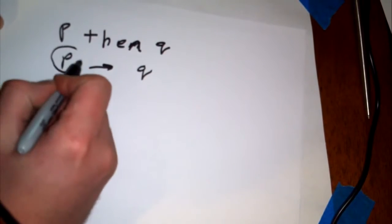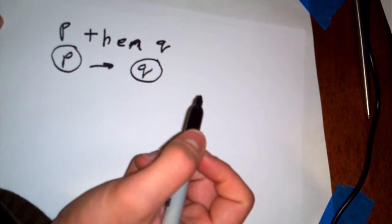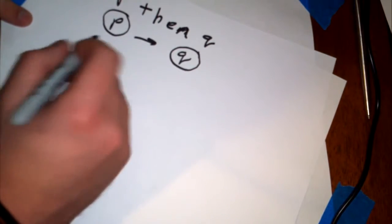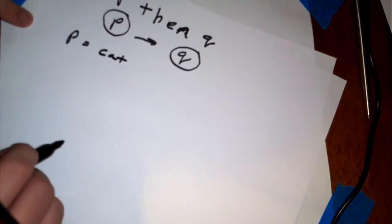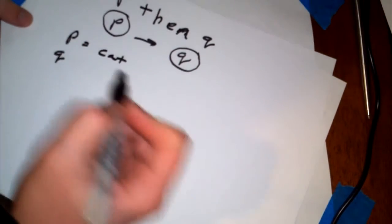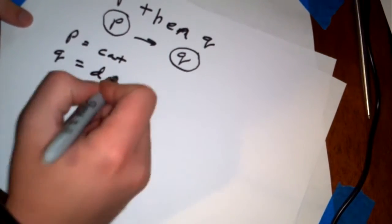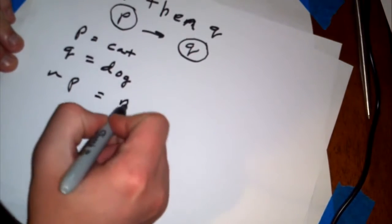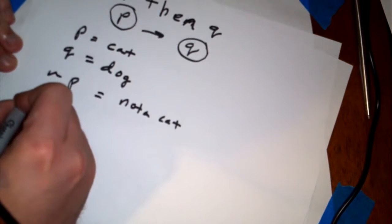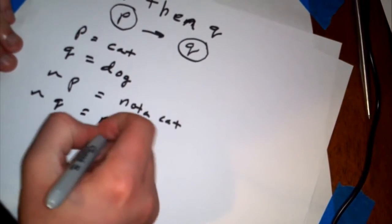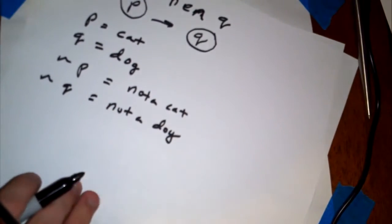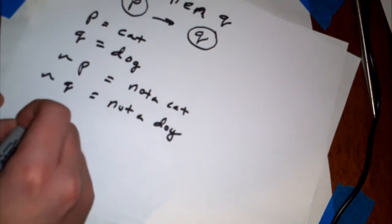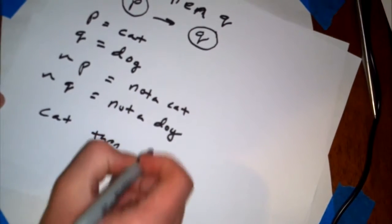This can be any sort of thing that we're talking about. If we're talking about something like this, let's say P is equal to a word cat, or something like that. And, Q is equal to, I don't know, let's say dog. Something along those lines. Then, not P is the same as not a cat.